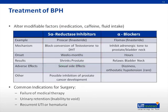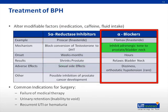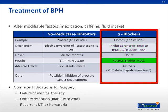On the other hand, alpha blockers decrease the adrenergic tone to the prostate and bladder neck. They work faster than the 5-alpha reductase inhibitors, but they do not actually shrink the size of the prostate. Side effects include dizziness and orthostatic hypotension, both of which are rare with these medications.